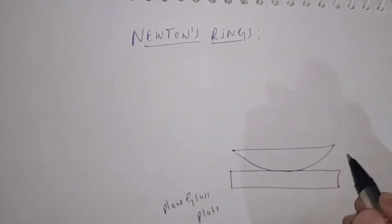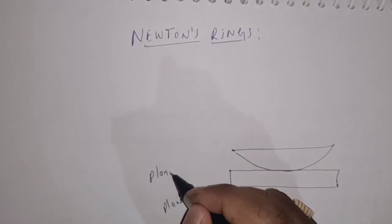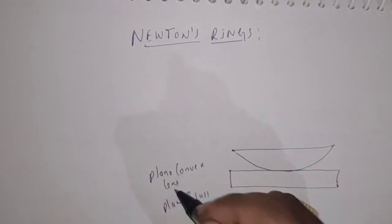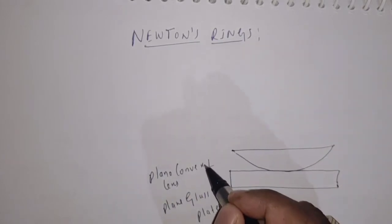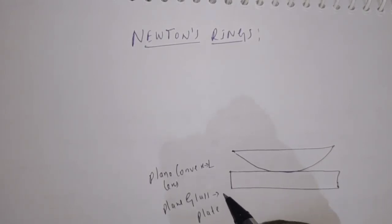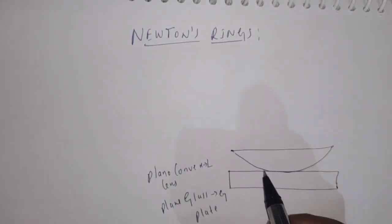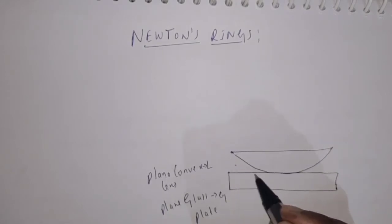This is the plano-convex lens, and I am going to denote it by L, and the plain glass plate by G. Here, we can observe that a thin wedge-shaped air film is formed between them.